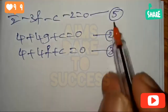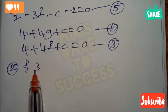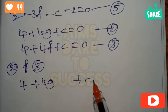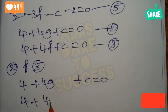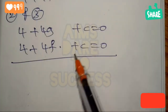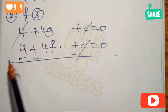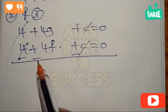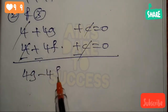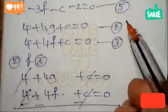Solving equations 2 and 3 to eliminate c: equation 2 is 4 + 4g + c = 0, and equation 3 is 4 + 4f + c = 0. Subtracting, c - c cancels, 4 - 4 cancels, leaving 4g - 4f = 0. This is equation 6.